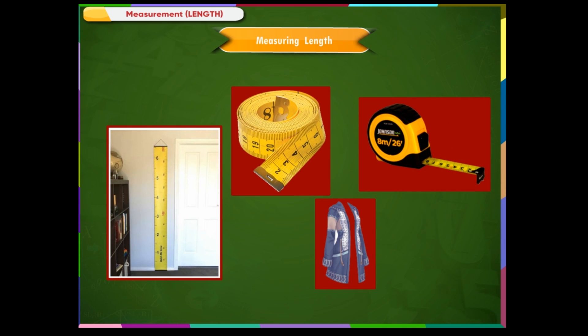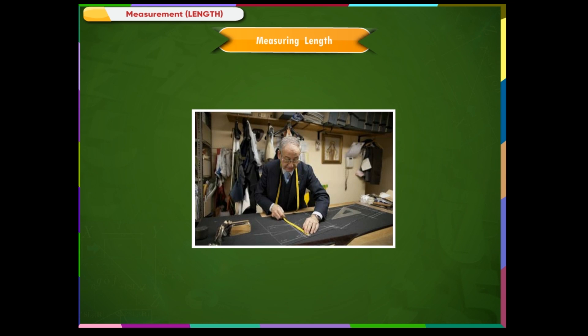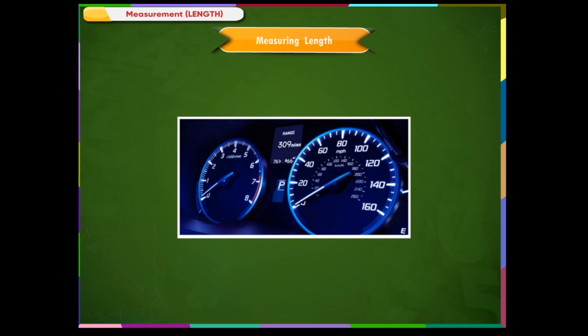We measure bigger lengths with a meter tape. You must have seen such tapes with carpenters or masons. These are various meter tapes. This tape is used by tailors — the marks are in cm and m. Longer lengths are called distances. The distance between two cities or two places is measured using km scales. We see such measuring tools in our vehicles.